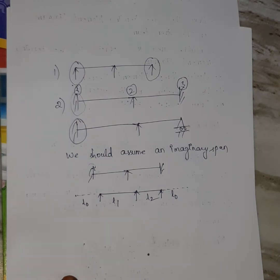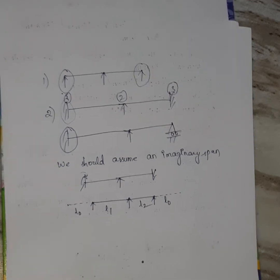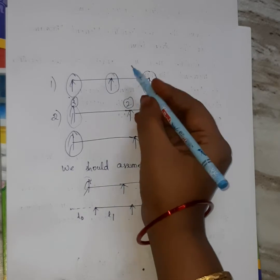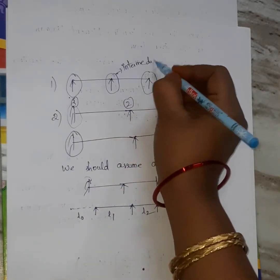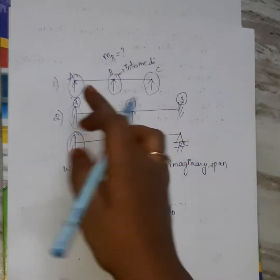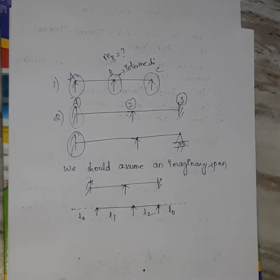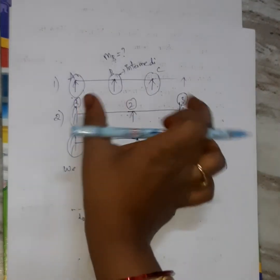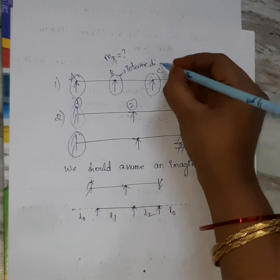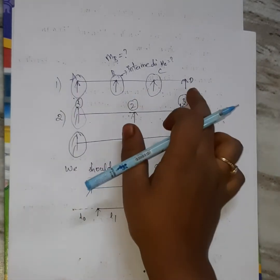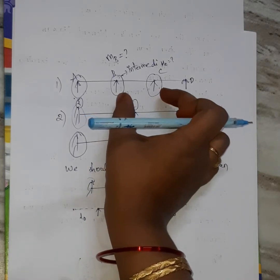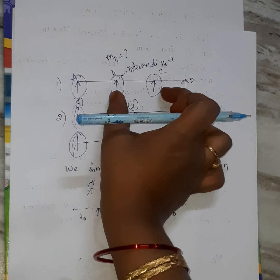The main important thing is: when there is a fixed support, and both ends are simply supported, the intermediate support acts as a fixed support. For example, at supports A, B, and C — we calculate the moment. For a simply supported beam, the moment at the first and last end is 0. The intermediate support acts as a fixed support, so we calculate the moment there.